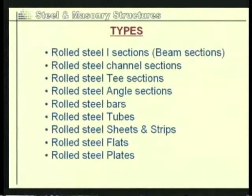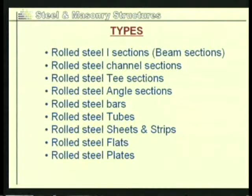Based on cross-sectional shapes, we have the following types of rolled steel sections: rolled steel I sections, channel sections, T sections, angle sections, bars, tubes, sheets and strips, flats, and plates. Once we know the different types, let us examine the properties of each section, their designations, and the situations where each one is used.